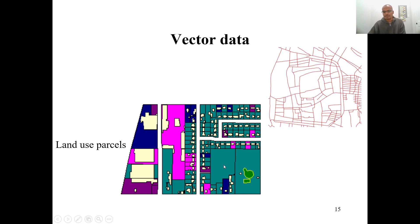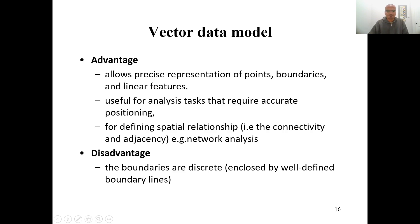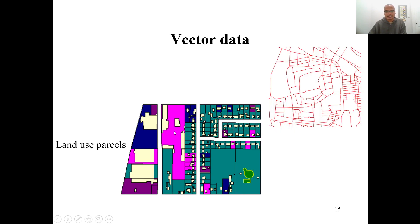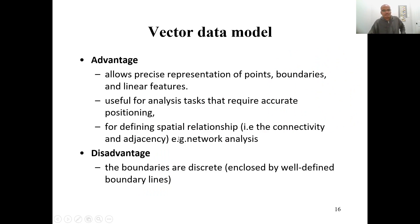Vector data is very good for representing precise boundaries of linear features, point features, or polygon features, and can be used efficiently for various analyses with less data storage space. It is also helpful for defining spatial relationships, especially for network analysis. The limitation is that it is discrete — by looking at a vector feature alone, you cannot tell what it represents without additional information or a legend to interpret it.